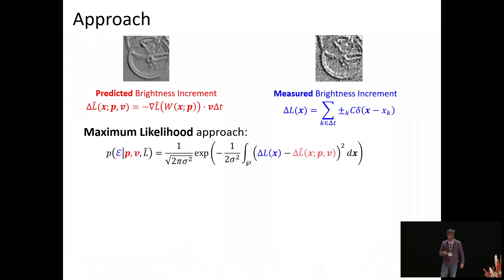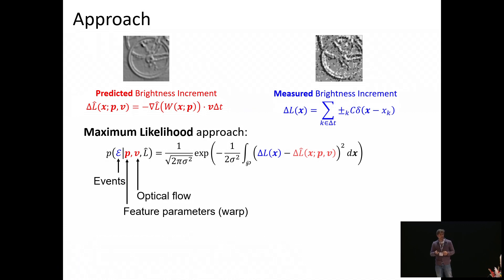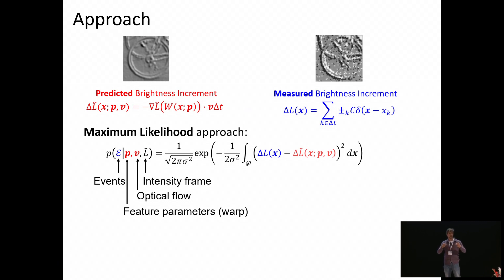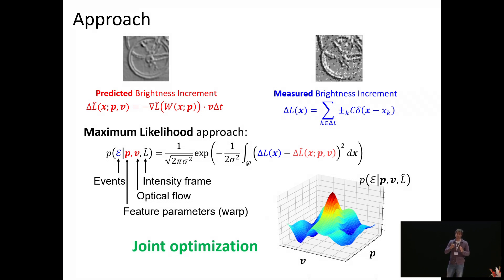Our method introduces a likelihood function describing how events are explained given feature parameters — alignment parameters, optic flow, and frame intensities. In our model, we consider a Gaussian distribution. At each time step, we find the new registration parameters P and the optic flow V by jointly optimizing this likelihood function to yield updates for the feature tracks.